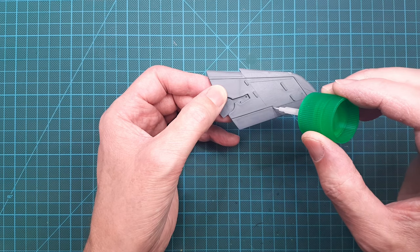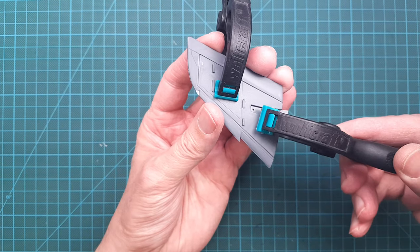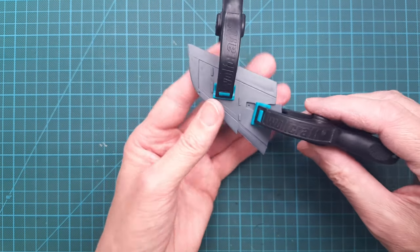As you can see there are Grand Canyon sized seams that is supposed to look like panel lines. There is also a small step between the parts.